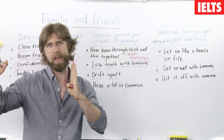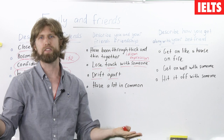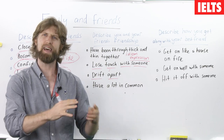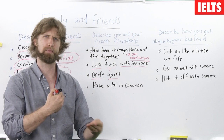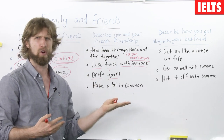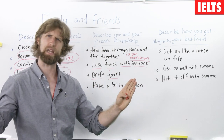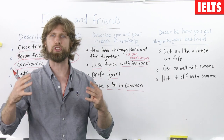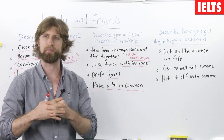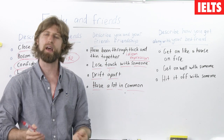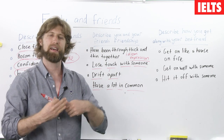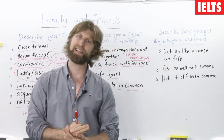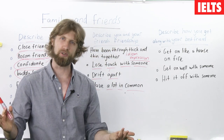Drift apart means you used to have many things in common and did a lot of things together, but now you went one way and they went another way. For example: when I was young, I had a best friend, but after he got his girlfriend, they started to hang out a lot together, and me and him lost touch. After a while, we drifted apart and didn't really speak anymore. Have a lot in common means you and your friends like the same things. You can say: me and my bestie have a lot in common — we both like the same music, we both like shopping, we love doing things together.